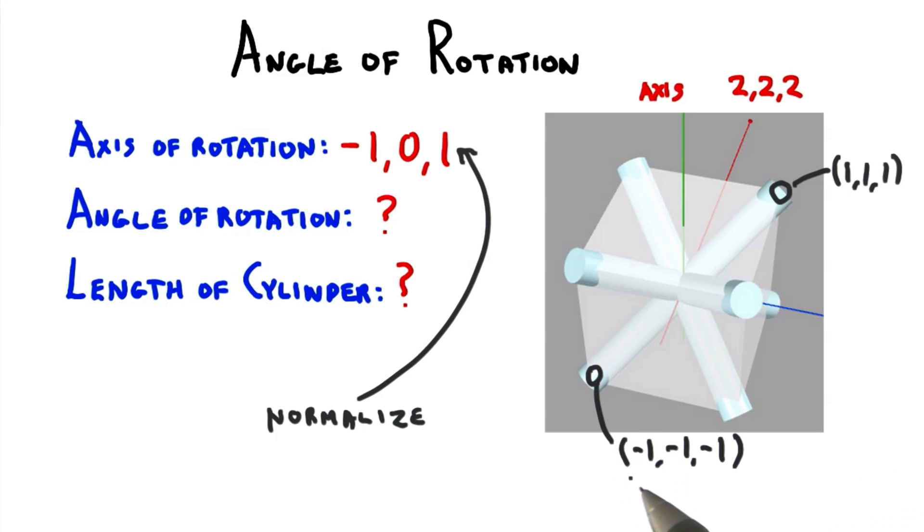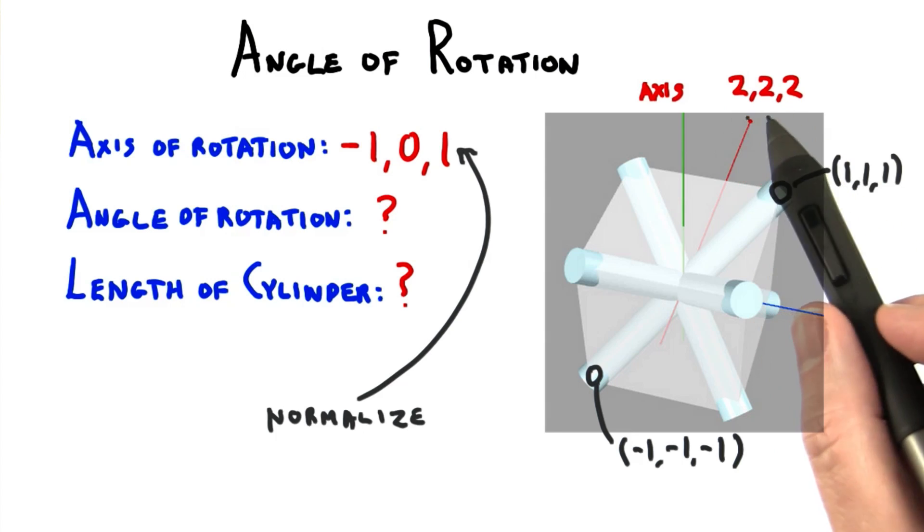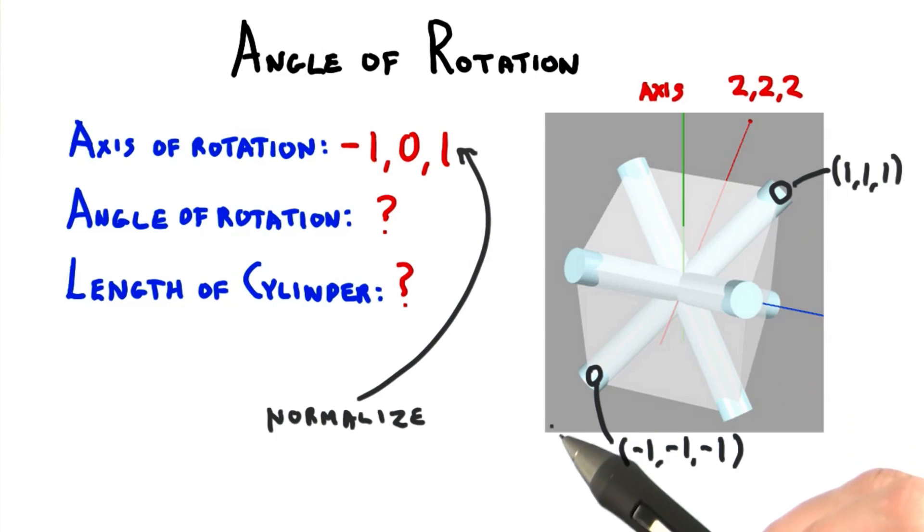Here's the easiest one. It goes from negative 1, negative 1, negative 1 to 1, 1, 1. So the cylinder's axis is 2, 2, 2. We can also use this vector's length to find the distance from one corner to another.